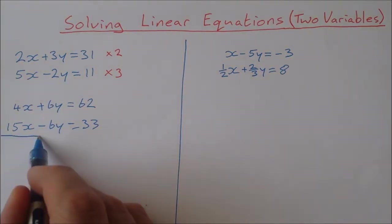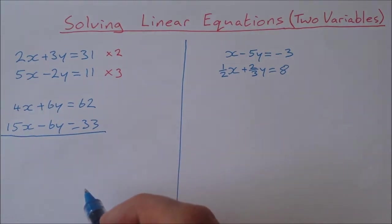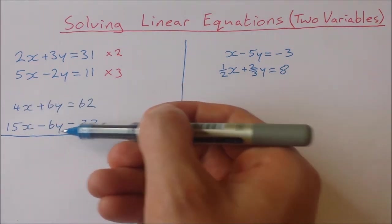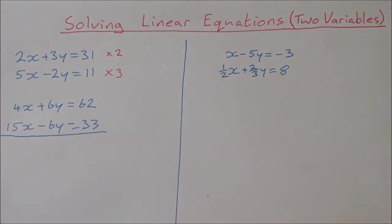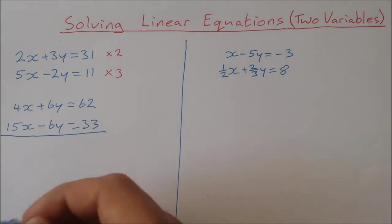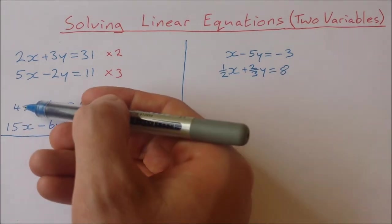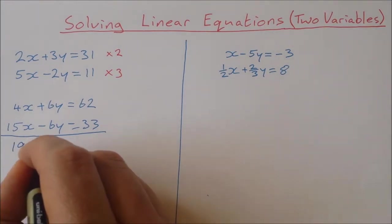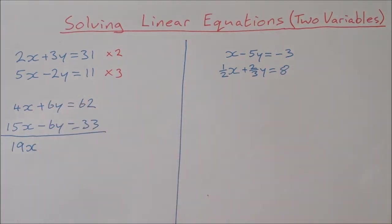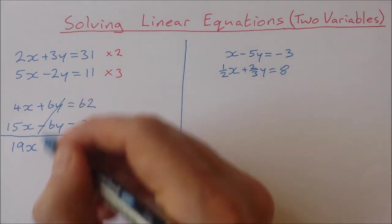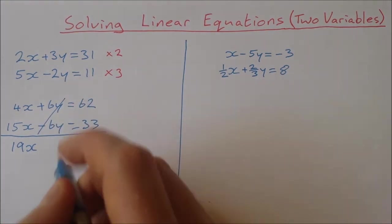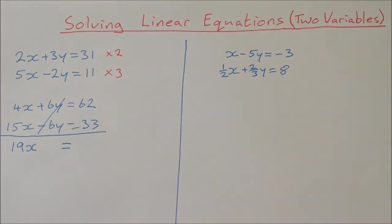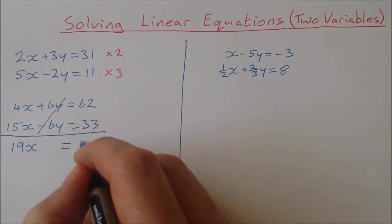If I add these two equations together — adding x's to x's, y's to y's, and constants to constants — I'll be left with one equation with one unknown. 4x and 15x is 19x, and 6y minus 6y is 0, so that cancels out. That equals 62 plus 33, which is 95.